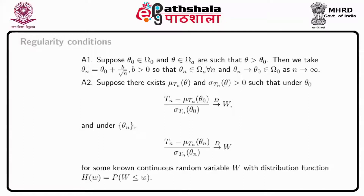Then we take theta_n equal to theta naught plus B by root n, where B is positive, so that theta_n belongs to omega_n for all n and theta_n tends to theta naught belonging to omega naught as n tends to infinity. Suppose there exists mu function of theta under T_n and sigma function of theta under T_n, where sigma is positive.